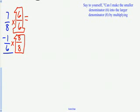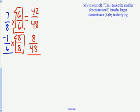So when I do my multiplication, I end up with 42 48ths on the top and 8 48ths on the bottom. I'm going to go ahead and subtract 42 48ths minus 8 48ths, and I'm going to end up with 34 48ths as my answer. In this case, that has to be reduced.